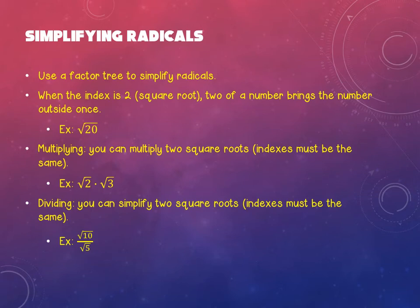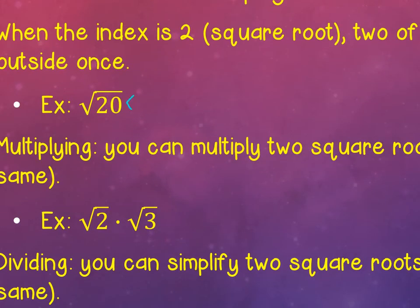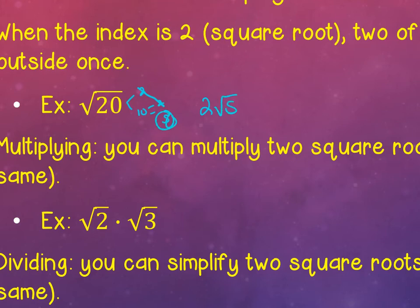When the index is two, it's a square root. If it's a square root, the index is two. That means you need two of that number to bring it outside once. So what does that mean? If I had something like the square root of 20 — obviously this is not a perfect square. I would break this down all the way to the primes: 2 and 10, then 2 and 5. Because it's a square root, I need two of that number to go to the outside. So I cancel both of these 2s by bringing one 2 to the outside. 5 does not have a match, so it stays underneath. That's how I would simplify square root of 20. You can also say this is 4 and 5, and the square root of 4 is 2 — bring that to the outside. That works the same way.